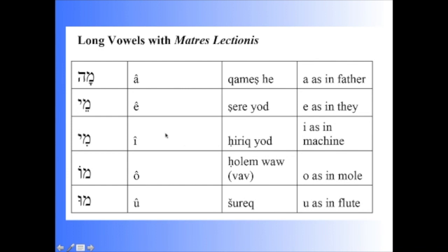The Hireq-Yod is written as a Hireq with the Yod following. It's pronounced as one vowel, and it is pronounced as an E as in 'machine.' The Cholem-Vav combines the Vav with the sign of the Cholem, which was written over the left upper side of a consonant, and it is pronounced O as in 'mole.'